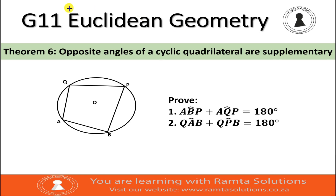Welcome to Ramta Solutions. Welcome to your Grade 11 Euclidean Geometry lesson. Today we are looking at Theorem 6, which says the opposite angles of a cyclic quadrilateral are supplementary.